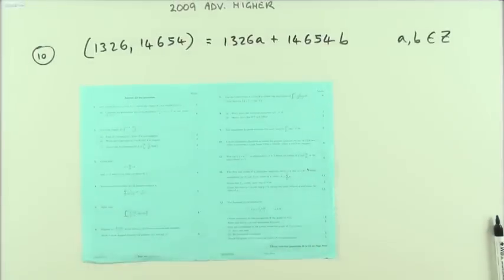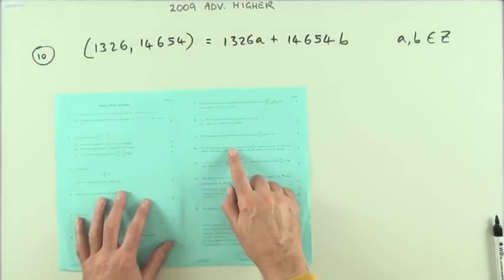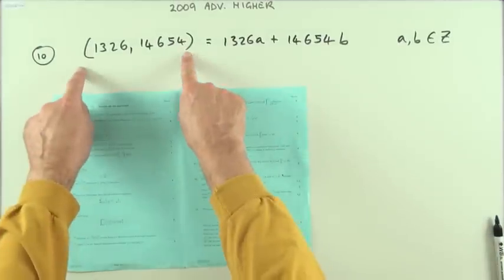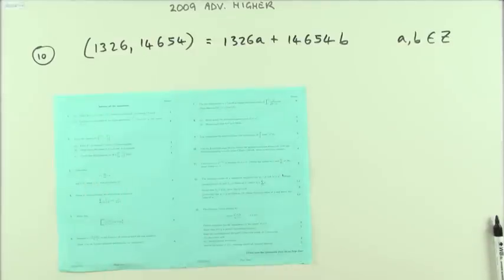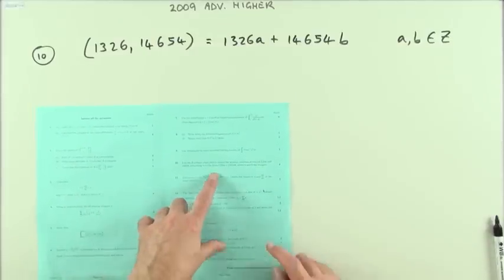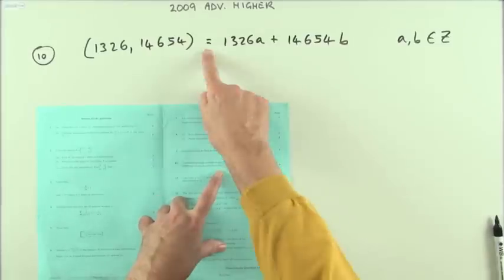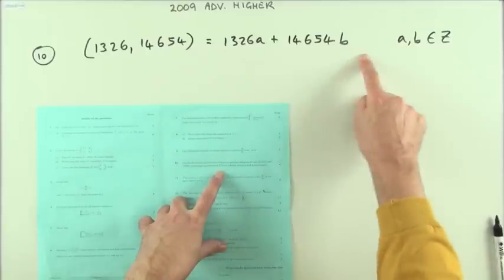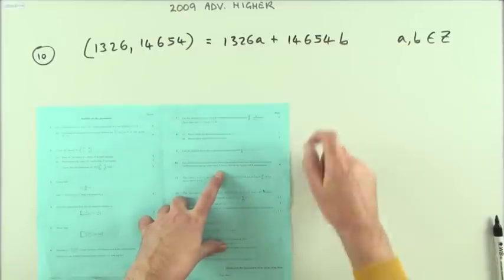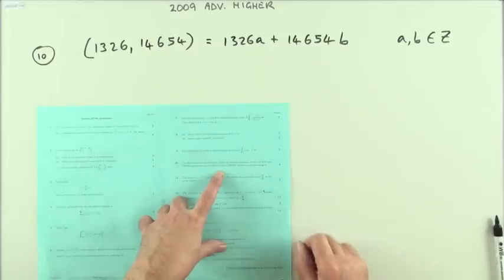Number 10 then from the 2009 advanced higher. Use the Euclidean algorithm to find the greatest common divisor, rotated by these brackets, of these two numbers and express the result in this form, that's the sum of these two parts, so I'll be equal to that, so you're really expressing it in the form of a particular solution to a Diophantine equation.